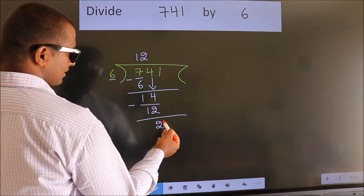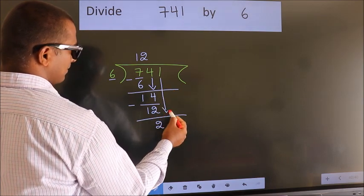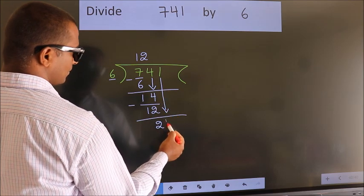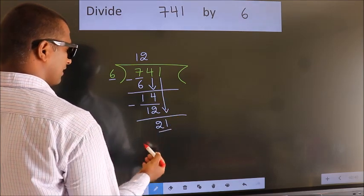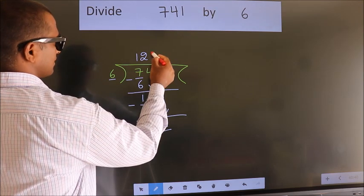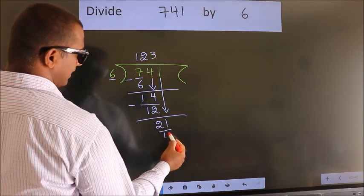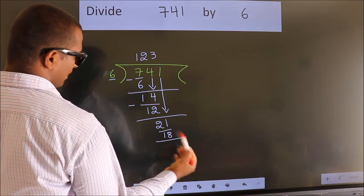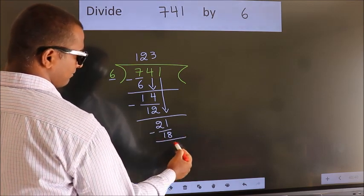After this, bring down the beside number. So, 1 down. So, 21. A number close to 21 in the 6 table is 6 threes, 18. Now, we subtract. We get 3.